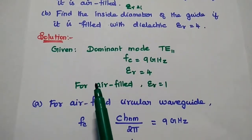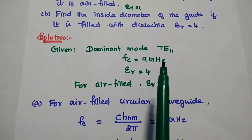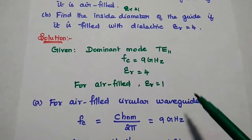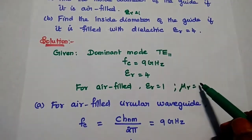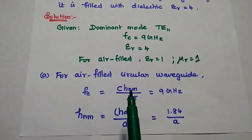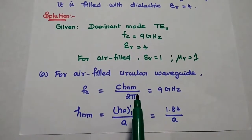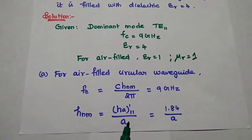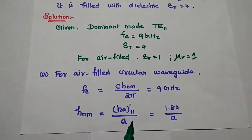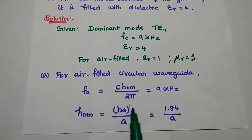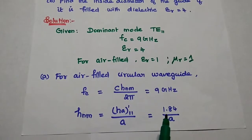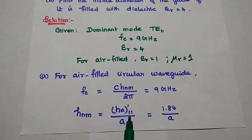For an air-filled circular waveguide, the cutoff frequency formula is fc = C × H_nm / 2π, where H_nm = H'_11 / A. We need to find A. H'_11 represents the Bessel's value for TE11 wave, which is 1.84. Setting fc = 9 GHz and substituting C = 3 × 10⁸, H'_11 = 1.84, into fc = C × 1.84 / (2πA), we move A to the left-hand side and 9 × 10⁹ to the denominator to get A = 9.76 × 10⁻³ m, which is 0.976 cm.